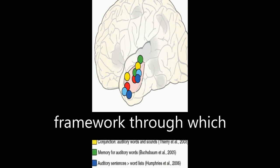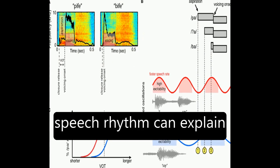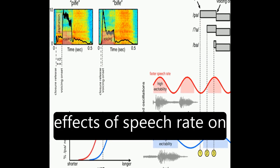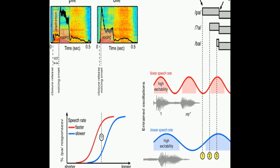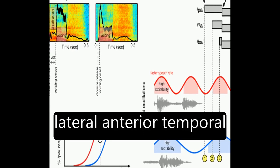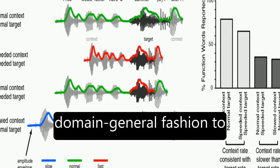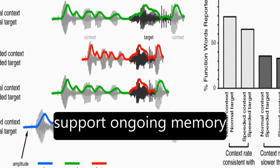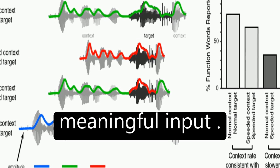The article suggests a framework through which neural entrainment to speech rhythm can explain effects of speech rate on word and segment perception. It also proposes that lateral anterior temporal cortex functions in a domain-general fashion to support ongoing memory and integration of meaningful input.